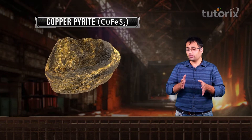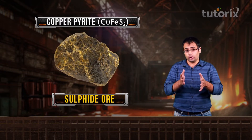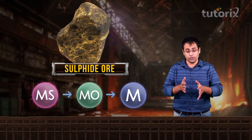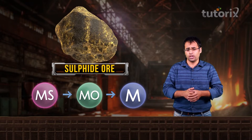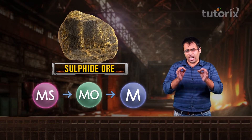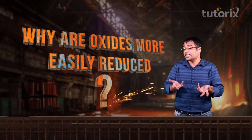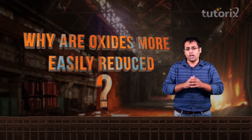Now if you carefully observe this ore, copper pyrite, you will notice that it is a sulphide ore. Therefore, from our previous knowledge, we know that sulphide ores have to be converted into their oxides because it is easier to reduce oxides as compared to sulphides. A natural question arises: why is it easier to reduce oxides as compared to sulphides? Let me answer that question.